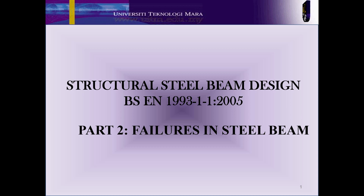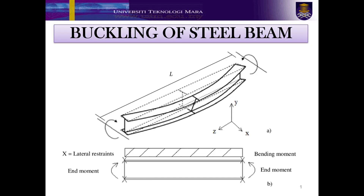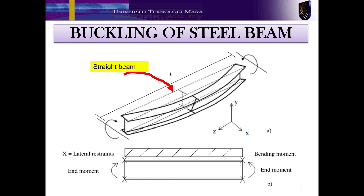In Part 2, I am going to explain about failures in steel beam. Buckling is the event where a beam spontaneously bends from straight to curved under a compressive load. This picture shows the buckling of an I-beam with equal but opposite end moments.